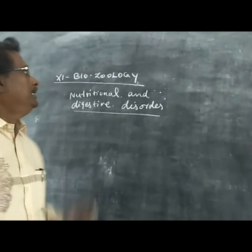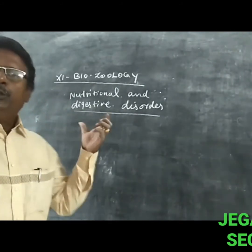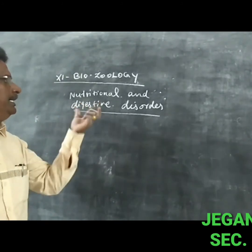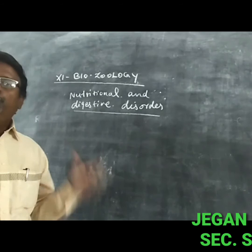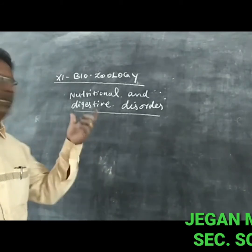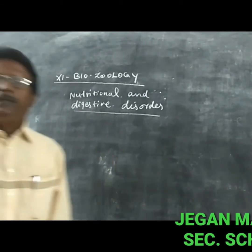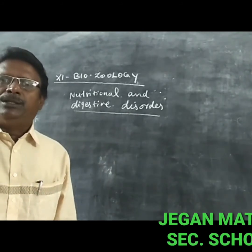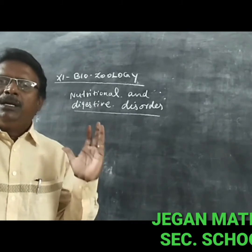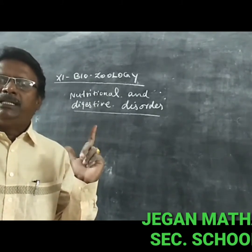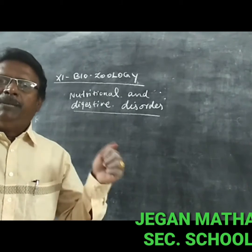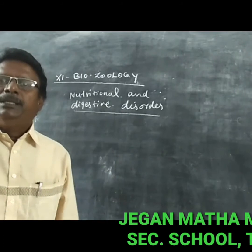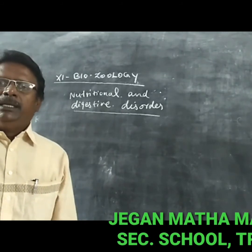Good morning students. This is 11th standard Biology. The topic is nutritional and digestive disorders. What is nutrition? They have a balanced diet. The food consists of carbohydrate, protein, fat, vitamins, mineral salt, and water. When they occur in correct proportion, it is called a balanced diet.